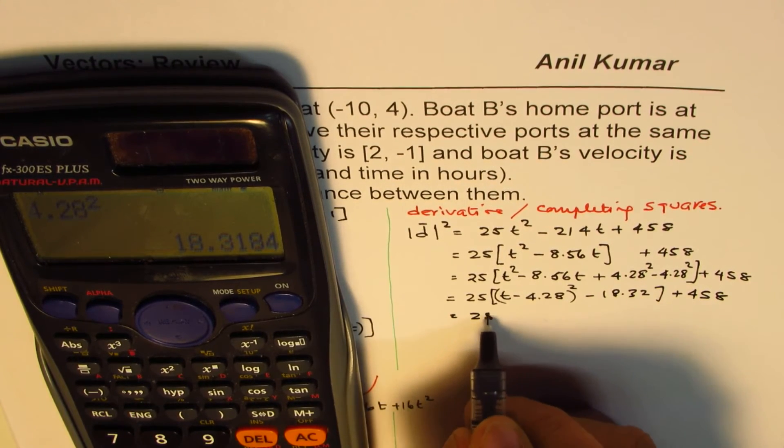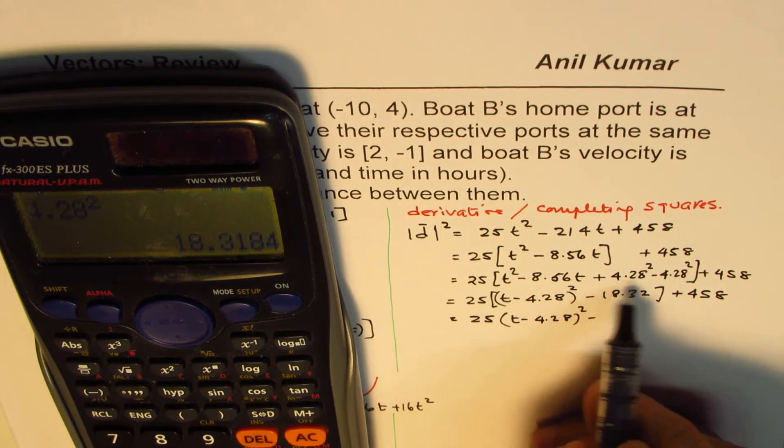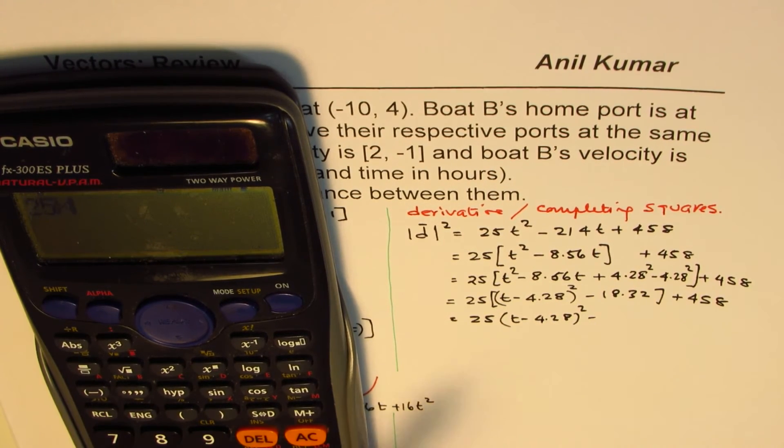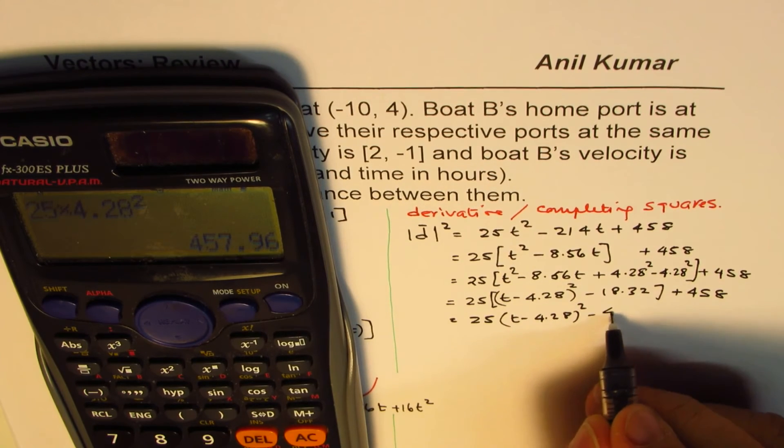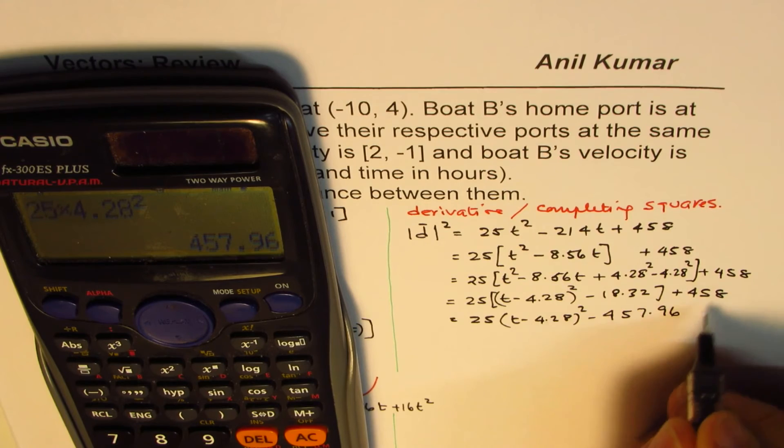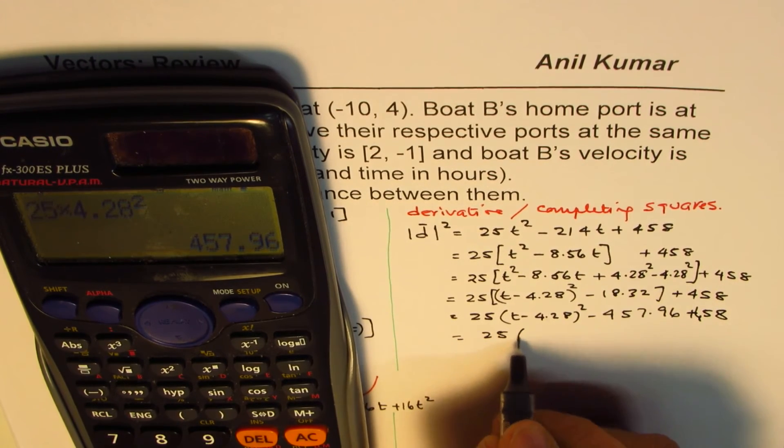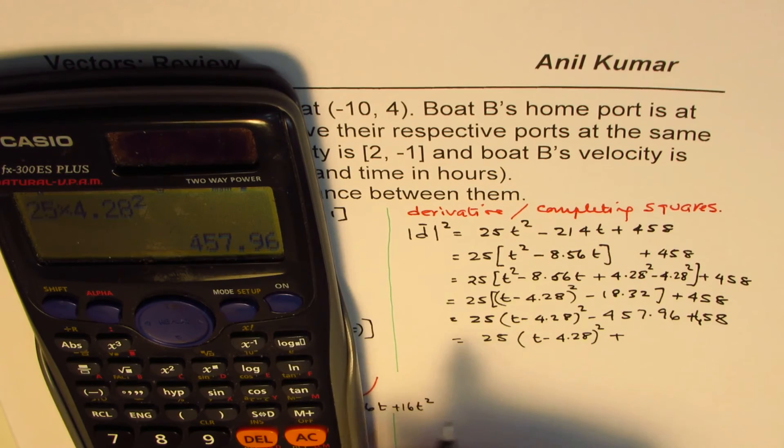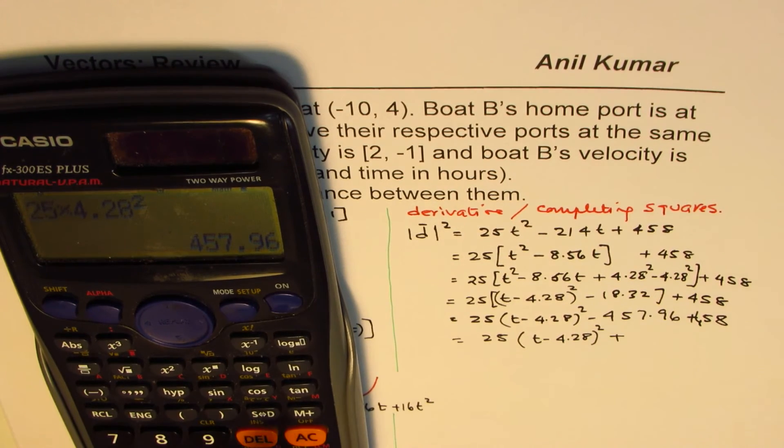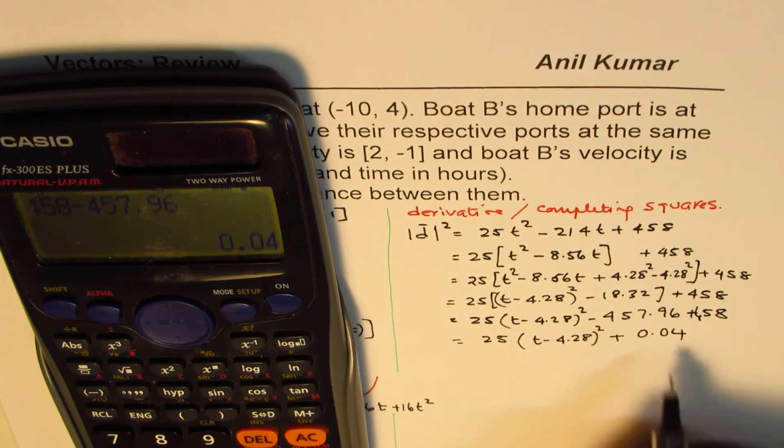That would be better. 25 × 4.28² equals in decimals 457.96. And we have here 458. So let's see what we have. 25(t - 4.28)² and minus and plus. So we'll add, we'll take away this: 458 - 457.96 equals 0.04. So that's what we get.